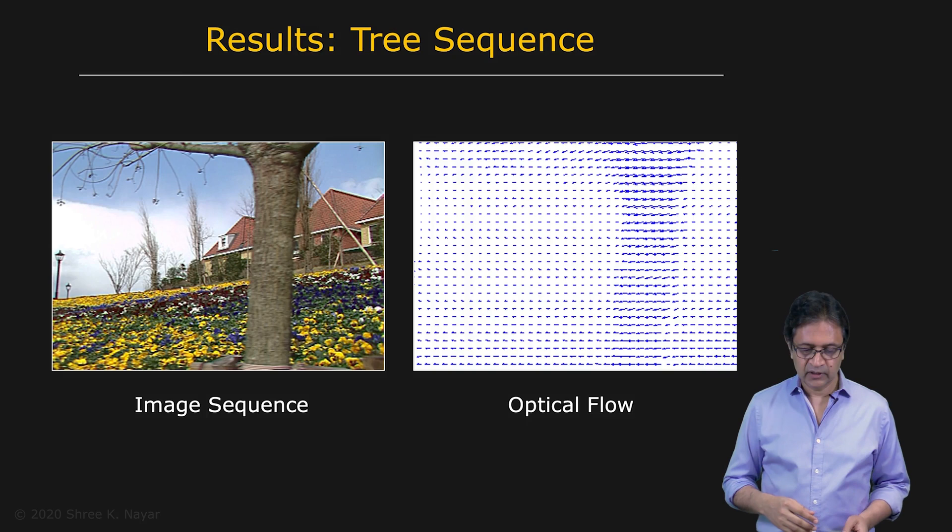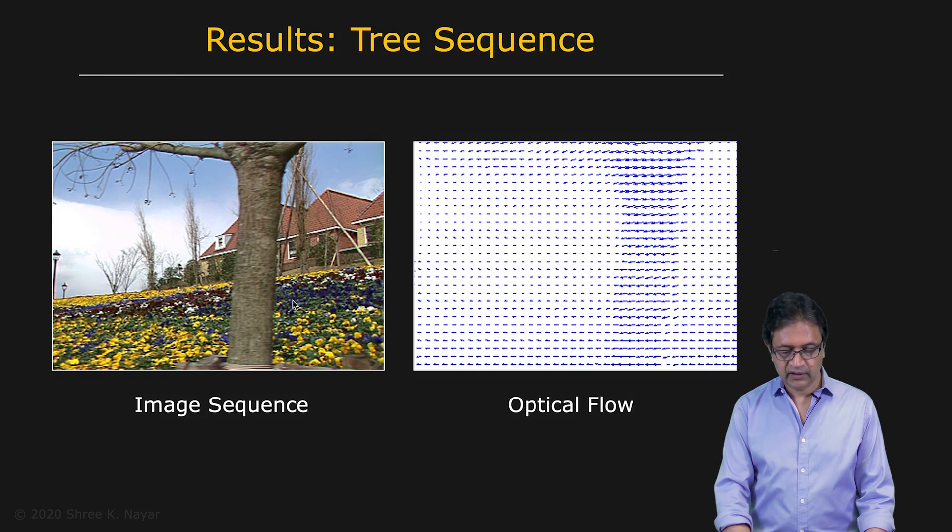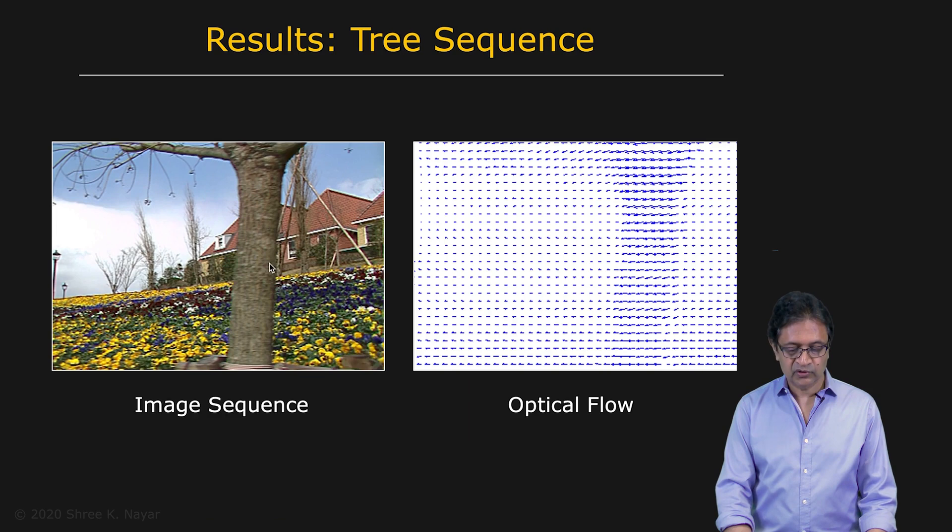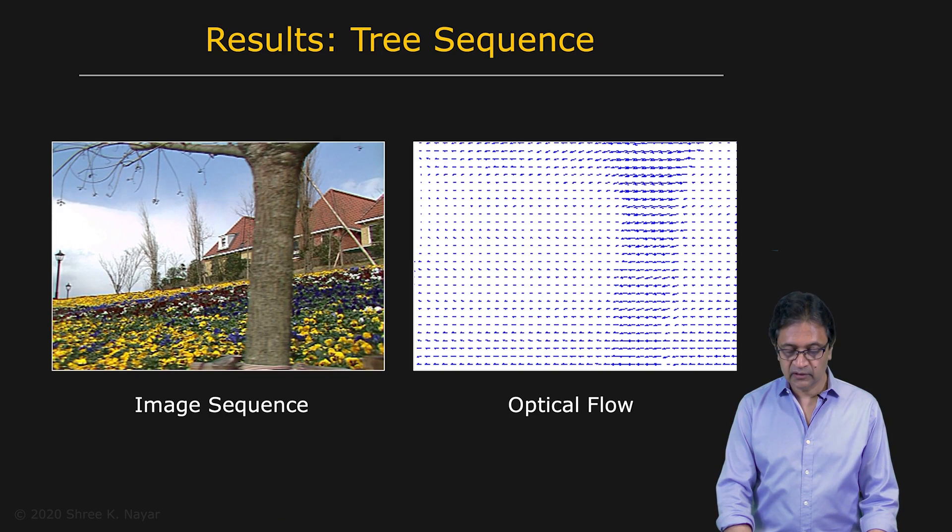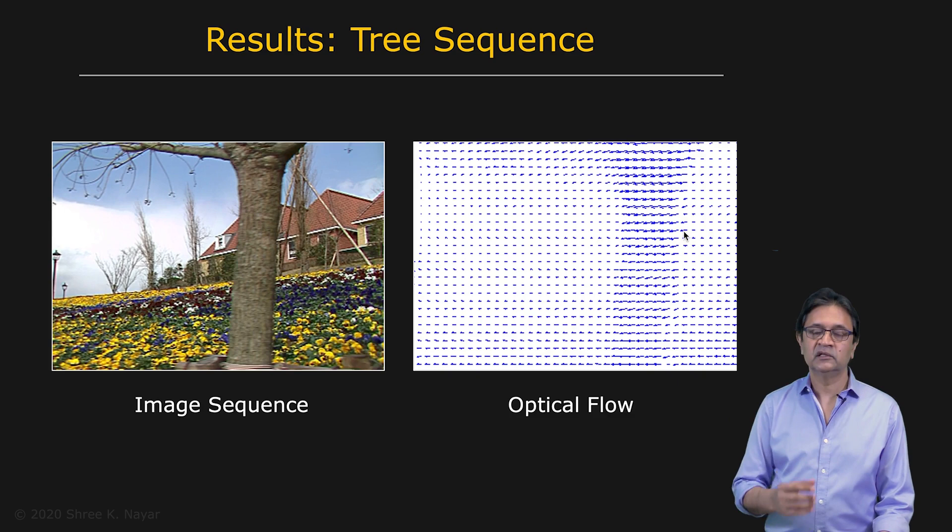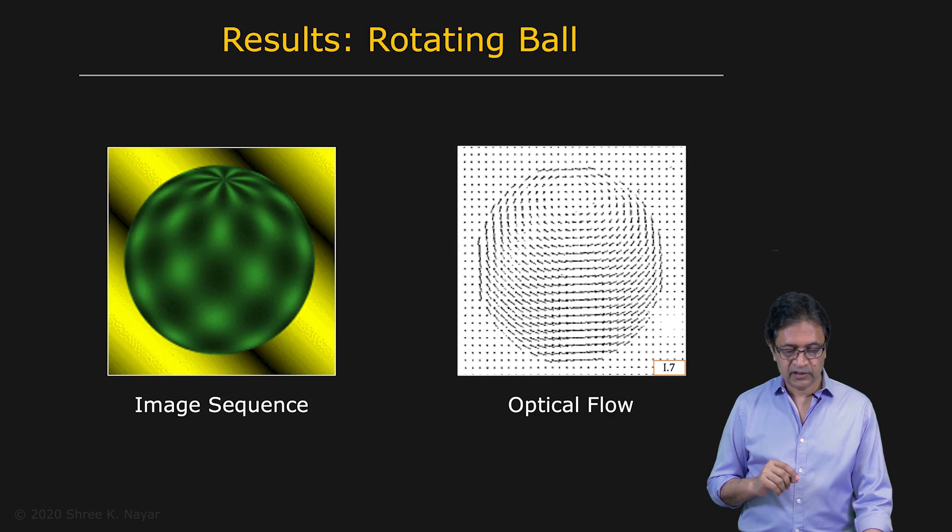So let's take a look at how this works. Here's a scene. You can see that you have rich texture here, less texture here, large motions and small motions, but you get a fairly good optical flow result. Again, each vector here, each needle that you see right here reveals the speed of the motion of the point as well as the direction.